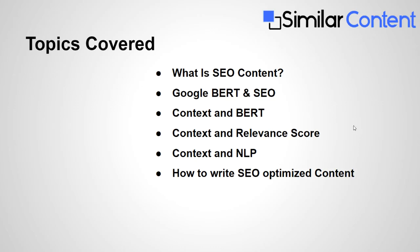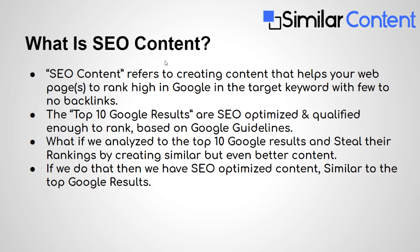First of all, what is SEO content? SEO content refers to content that helps your website, page, or blog get a high rank in Google for a targeted keyword, with few or even without any backlinks. This can be done through analyzing the top 10 Google results, which are considered SEO optimized and qualified enough to rank. By analyzing them, we can create similar content and achieve a high rank in Google.